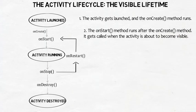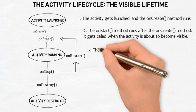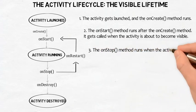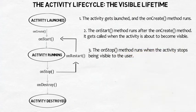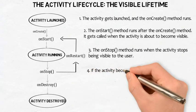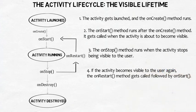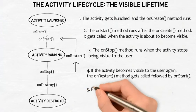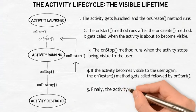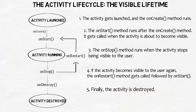After the onStart method has run, the user can see the activity on the screen. The onStop method runs when the activity stops being visible to the user; after it runs, the activity is no longer visible. If the activity becomes visible to the user again, the onRestart method gets called, followed by onStart. The activity may go through this cycle many times if the activity repeatedly becomes invisible and visible again. Finally, the activity is destroyed. The onStop method will usually get called before onDestroy, but it may get bypassed if the device is extremely low on memory.